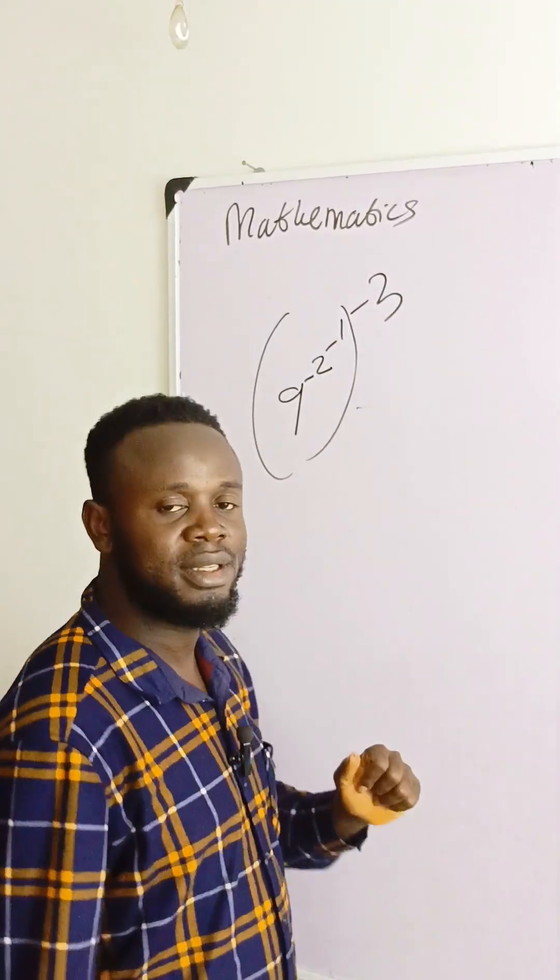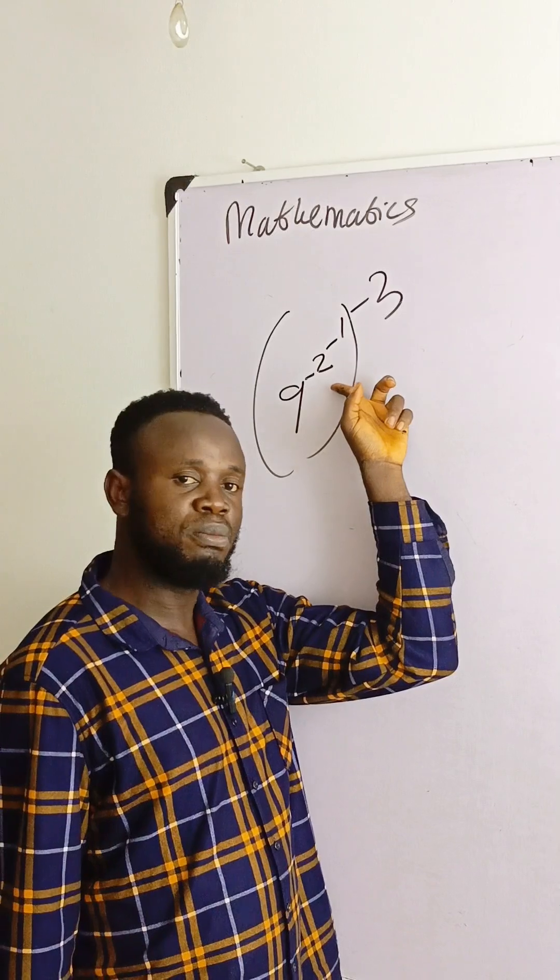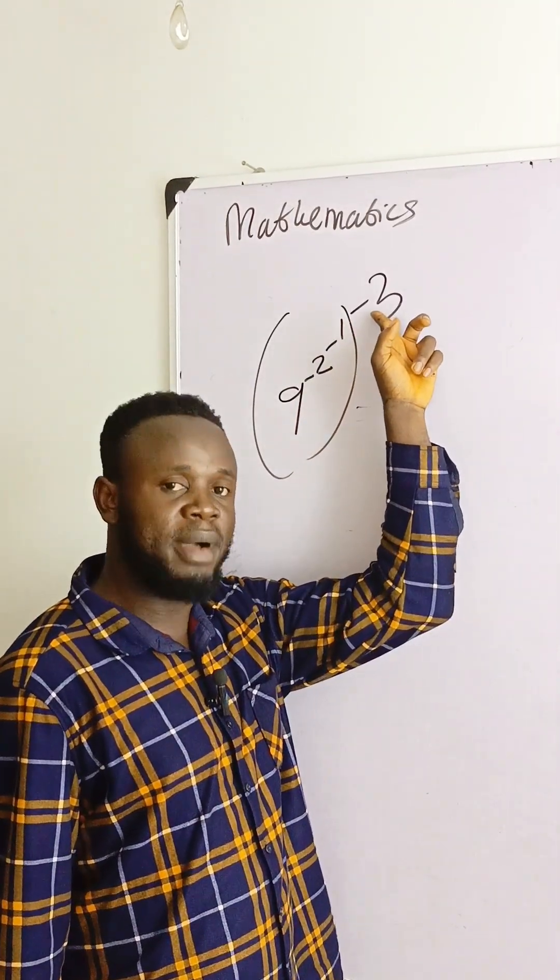We have repeating exponents here, that's the power tower. 9 is to power minus 2, power minus 1, and then side bracket power minus 3.